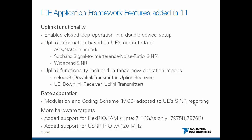Let me briefly explain which features were added in the 1.1 version. First, uplink functionality was added, enabling closed-loop operation and a double-device setup. One device acts as an E-NodeB and the other acts as a UE — one transmits the uplink signal, the other receives it. The uplink information based on the UE's current state includes the ACK/NAK feedback — whether the PDSCH decoding of the current transport block was successful — the sub-band signal-to-noise-and-interference ratio (SINR), and the wide-band SINR.